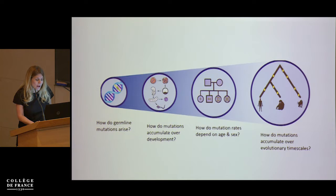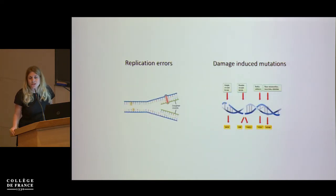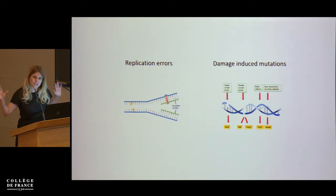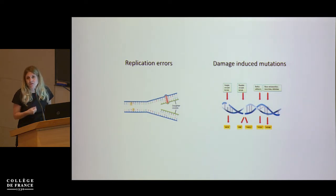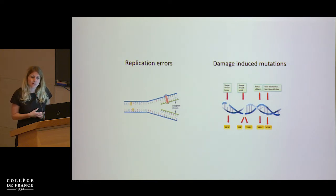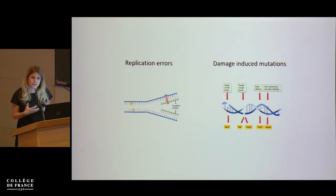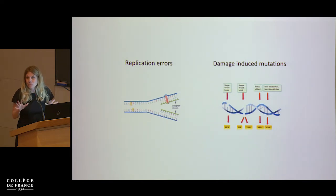Germline mutations can have many sources, falling into two general categories as a first-order approximation. They can arise from replication error — from the act of copying DNA itself — such as the accidental misincorporation of a dNTP. Or they can be due to damage from exogenous or endogenous mutagens, where errors go uncorrected or are improperly corrected by the next round of DNA replication. This dichotomy is an oversimplification because these processes interact; for example, the act of copying DNA can itself induce damage.